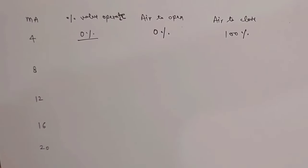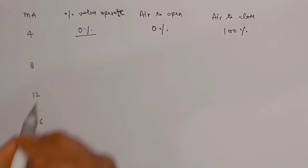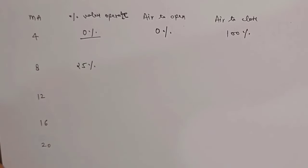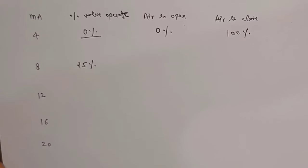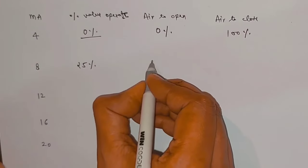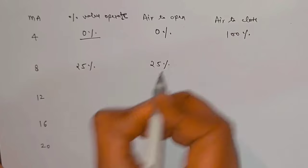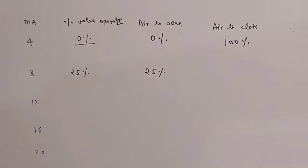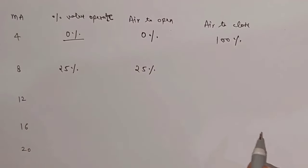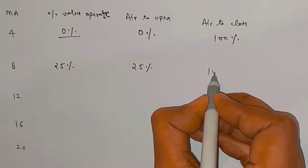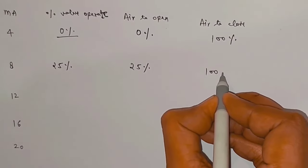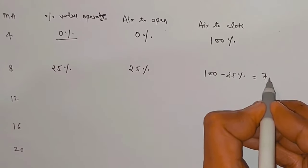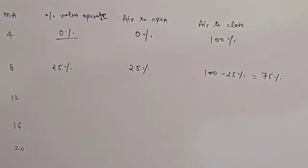Similarly, at 8 milliampere signal, the valve operates at 25%. So the opening percentage of the air-to-open control valve is 25%. Now, the air-to-close control valve will also operate 25%, so we subtract 25 from 100 — it will become 75%.